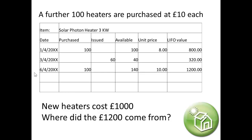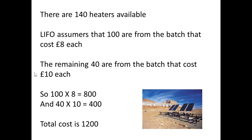The LIFO value gives us £1,200. The new 100 heaters cost £1,000. LIFO assumes that 100 of the heaters are from the batch that costs £8 each, and the remaining 40 are from the batch that costs £10 each, because we've sold the others that came from the £10 batch — which isn't necessarily true in reality. So we have 100 times 8 giving £800, and 40 times 10 giving £400. The total cost is £1,200.